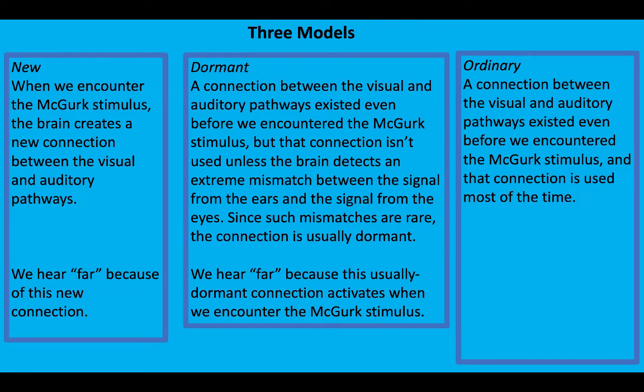Finally, ordinary says a connection between the visual and auditory pathways existed even before you encountered the McGurk stimulus, so in that respect it's like dormant, but it adds that that connection is used most of the time, that it's active even in ordinary processing, even when there aren't extreme mismatches between the eyes and the ears.